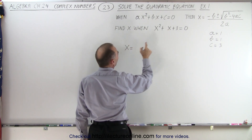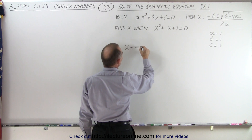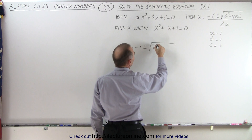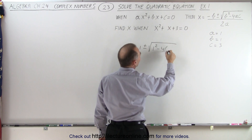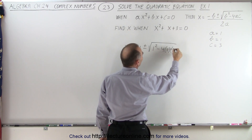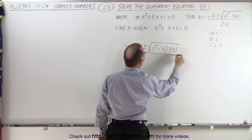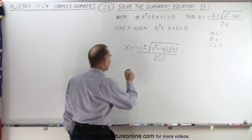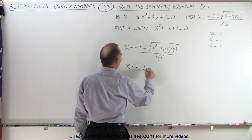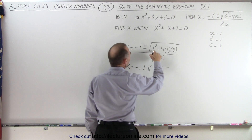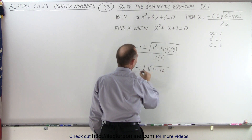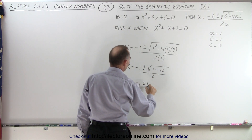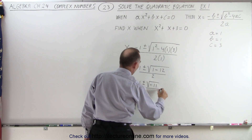We end up with x equals minus b — since b is 1, that gives us minus 1 — plus and minus the square root of b squared, since b is 1 that gives us 1 squared, minus 4 times a, which is 1, times c, which is 3, and the whole thing divided by 2 times a, where a is 1. Simplifying, x equals minus 1 plus and minus the square root of 1 minus 12, divided by 2 — or x equals minus 1 plus and minus the square root of negative 11 over 2.